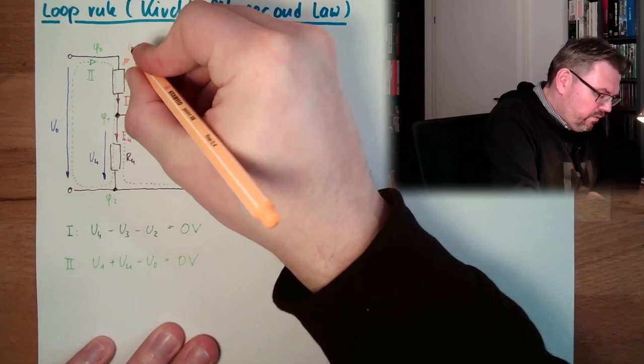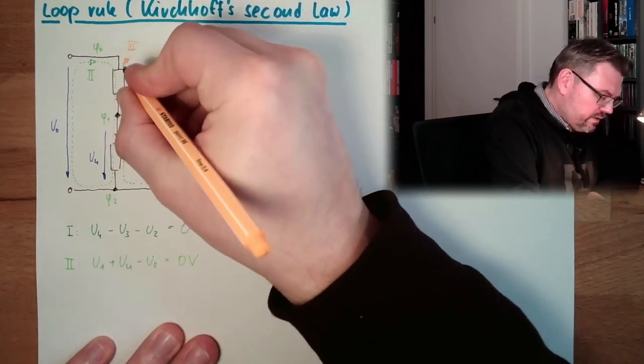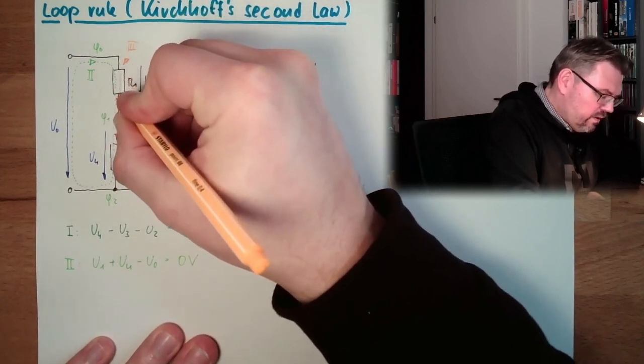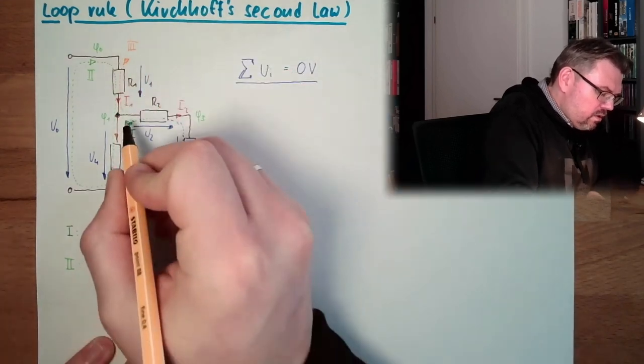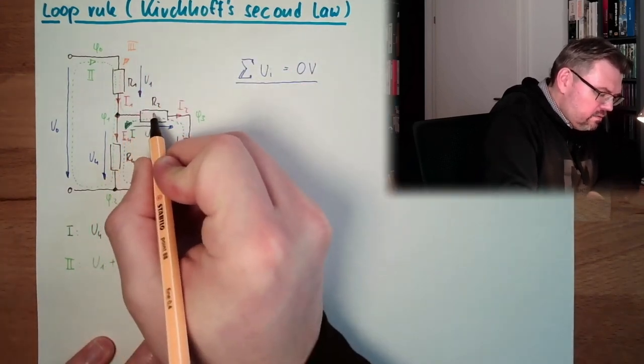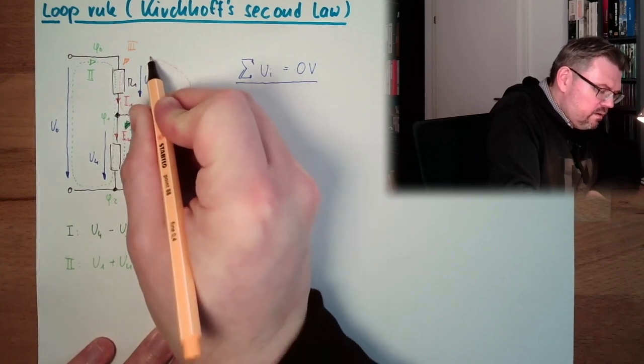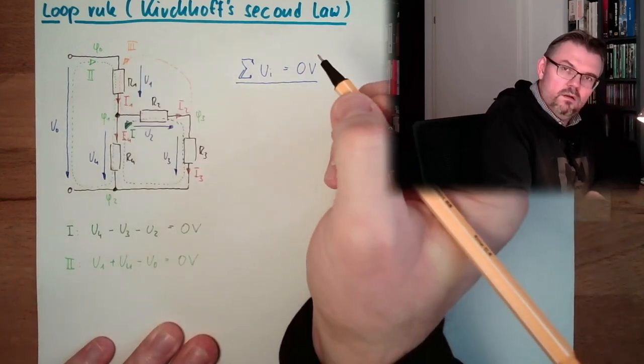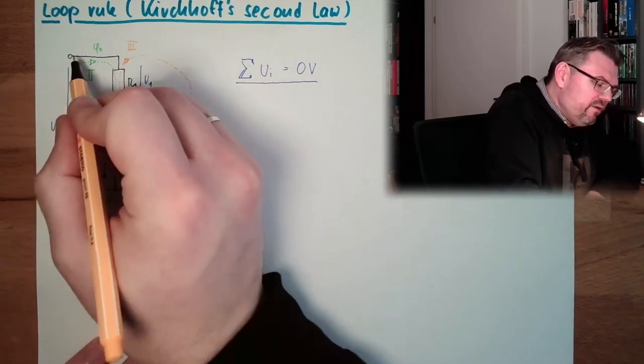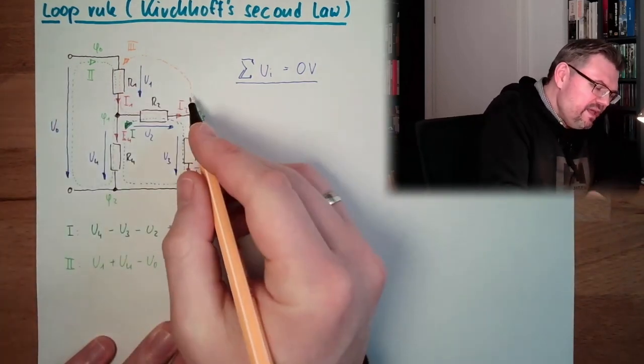Let's start here, this direction, this should be loop number three. This direction, so we are going down here, going here and changing from here to here again.